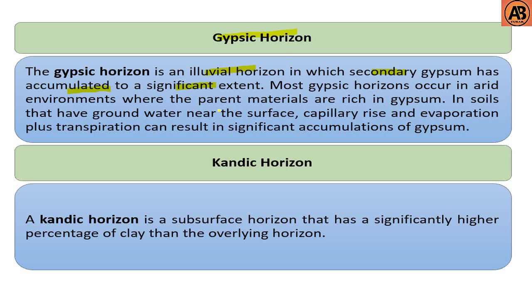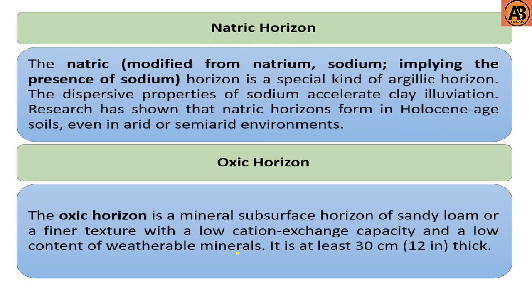The next one is the gypsic horizon. The gypsic horizon is an illuvial horizon in which secondary gypsum has accumulated to a significant extent. Most gypsic horizons occur in arid environments where the parent materials are rich in gypsum. In soils that have groundwater near the surface, capillary rise and evaporation plus transpiration can result in significant accumulation of gypsum. The next one is the kandic horizon. The kandic horizon is a subsurface horizon that has a significantly higher percentage of clay than the overlying horizon.